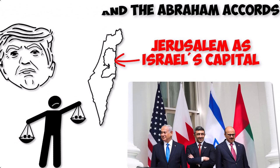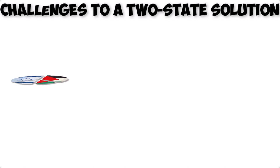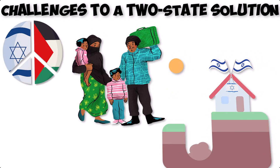Khalidi highlights the challenges to achieving a two-state solution, including the proliferation of Israeli settlements, issues related to refugees' rights, and the division among Palestinian political factions.